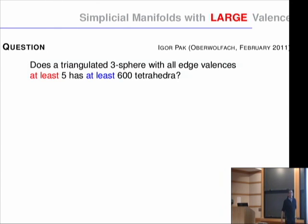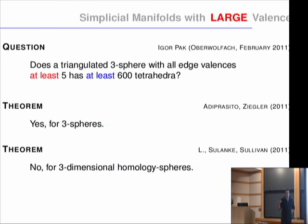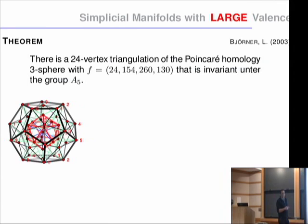Just last month, Igor Pak asked the reverse question: what happens if we look for 3-spheres with all edge valences at least five — do they have at least 600 tetrahedra? This question was answered on the same day, with two answers: it is true for spheres, and wrong for homology spheres. This is somewhat surprising because most of the time you cannot distinguish between spheres and homology spheres using Betti numbers or homology. But here there is a topological difference.